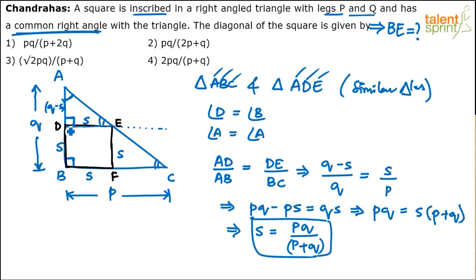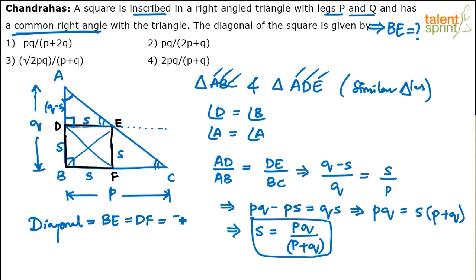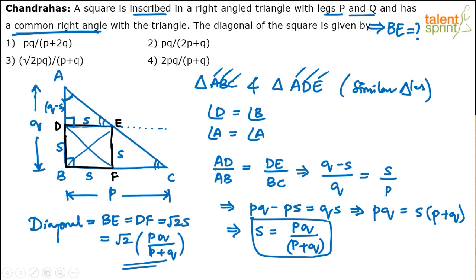But we need the diagonal, not the side. The diagonal of a square is √2 times its side. So the diagonal BE (or DF) equals √2 × s = √2 × pq/(p + q), which gives √2·pq/(p + q). Option 3 is the answer.